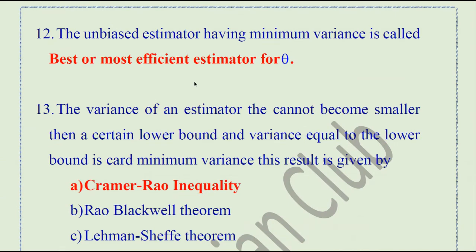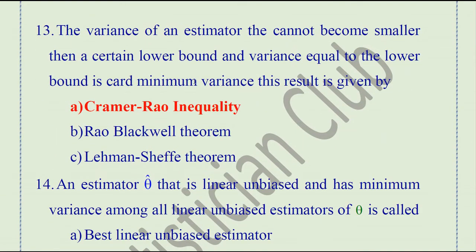The unbiased estimator with minimum variance is called the best or most efficient estimator of theta. The variance of an estimator cannot become smaller than a certain lower bound, and the variance equal to that lower bound is called minimum variance. This result is given by the Cramér-Rao inequality, which states that the variance of any estimator cannot become smaller than a certain lower bound.